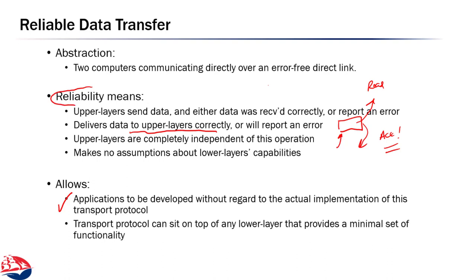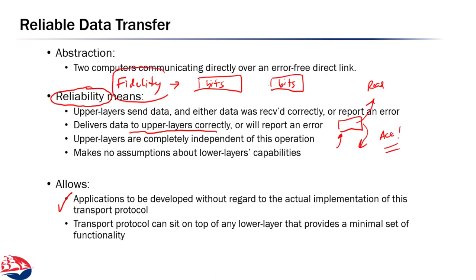I do want to point out one thing about reliability that the book doesn't explain well. When we say reliable, we mean that whatever data was sent was sent with some level of fidelity. Some bits went across the wire and were received exactly the same. The message itself could be malformed — for instance, I can send a malformed web browser request over TCP and the web server has to deal with that, but that's not the reliability we're talking about. We're saying if I sent a bad request, it arrived as that same bad request with no change. That's reliability — or fidelity, which I think might be a better term, but reliability is the industry standard.